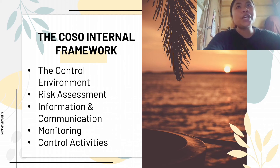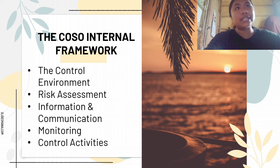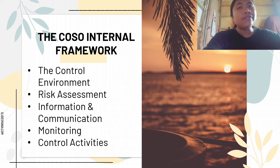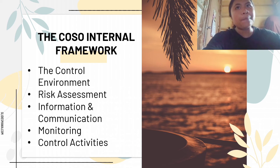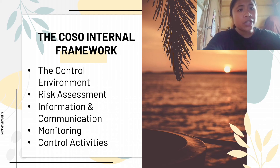Third is information and communication. The accounting information system of an organization is critical to its operations, decision making, and the preparation of current financial statements. The quality of information supplied by the system influences management's capacity to take actions and make decisions. An effective accounting information system should identify and record all valid transactions, provide timely information in sufficient detail for proper classification and financial reporting, accurately measure the financial value of transactions so their effects can be recorded in financial statements, and accurately record transactions in the time period in which they occurred.